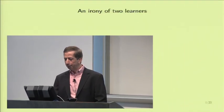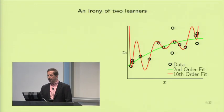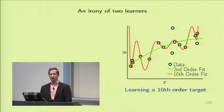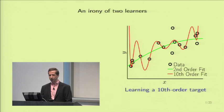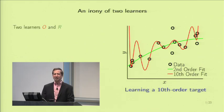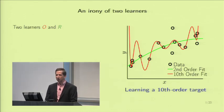Here's the irony. For the noisy simple target, two learners are given 15 points and told the target is a tenth-order polynomial. Choose your model. The first learner says: I know the target is tenth order, why not pick a tenth-order model? Makes sense. They use it, get the red curve, and cry. The second learner says: tenth-order model? Who cares how many points do you have? Fifteen.